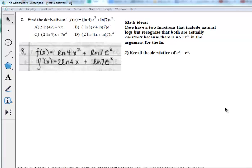This is question 8. You're asked to find the derivative of the ln of 4 times x squared plus the ln of 7 times e to the x.